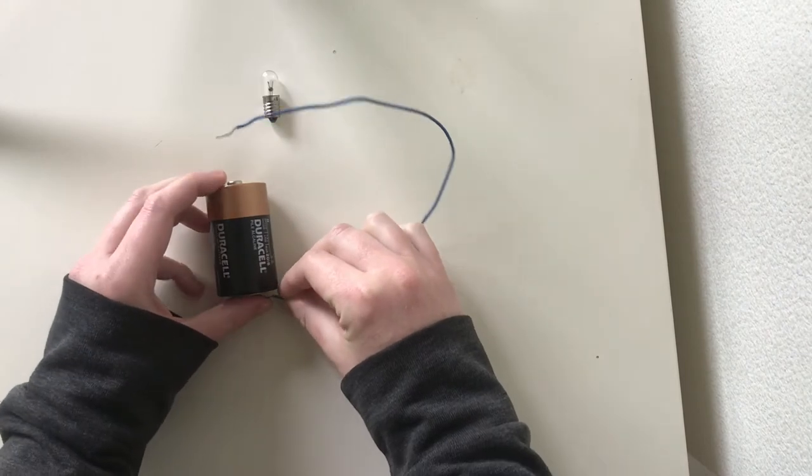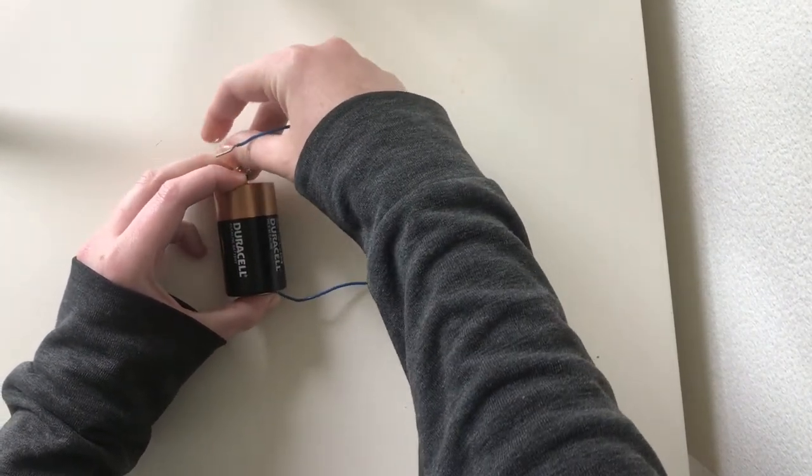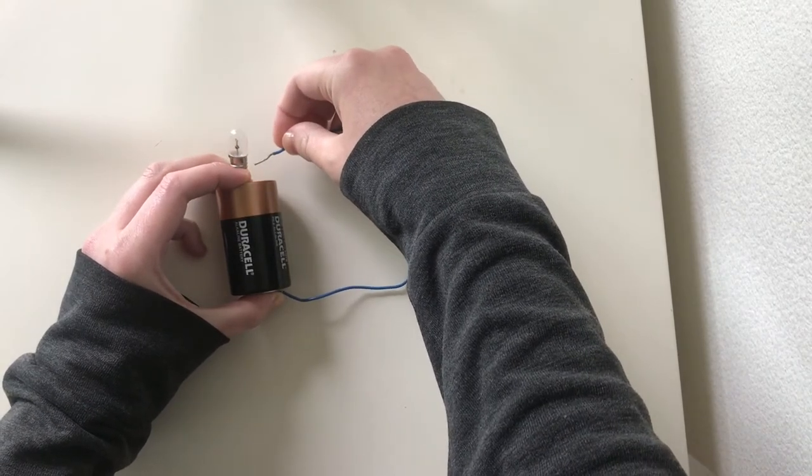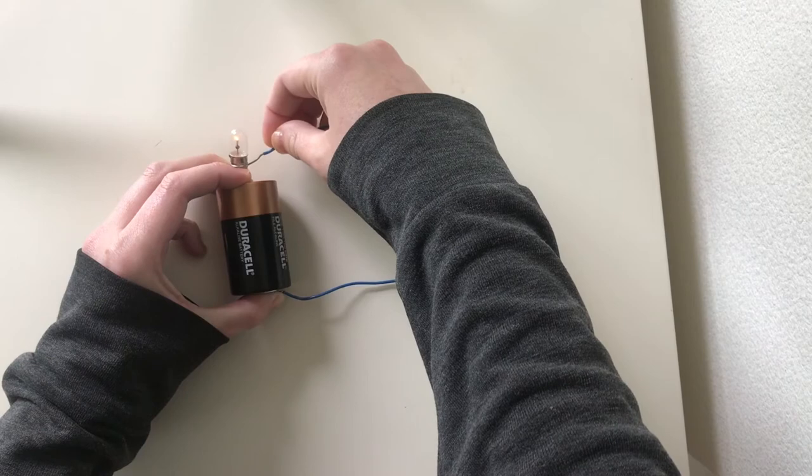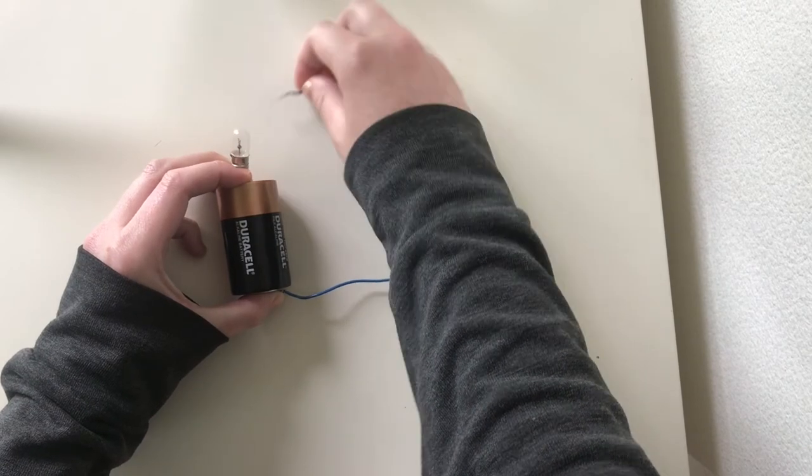To create the circuit, I'm going to hold one side of my wire against the negative side of the battery. The other side of the wire is going to touch the light bulb, and the metal part of the light bulb is touching the positive side of the battery. And you can see as I touch the wire to the light bulb, it lights up. But as soon as I break that circuit, it turns off again.